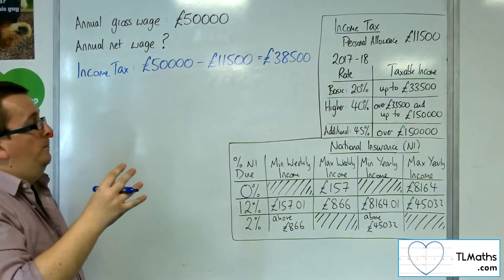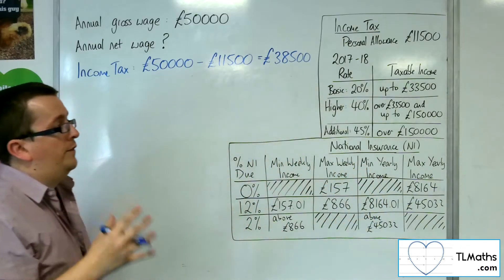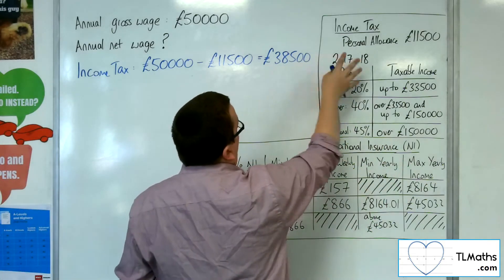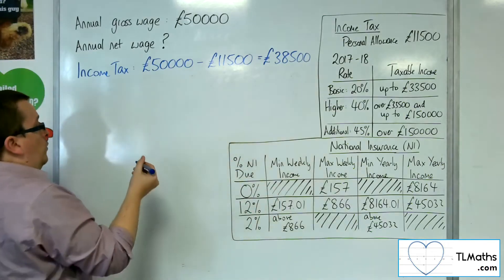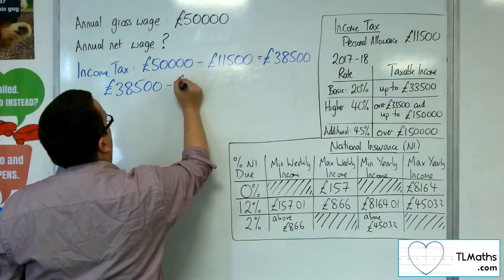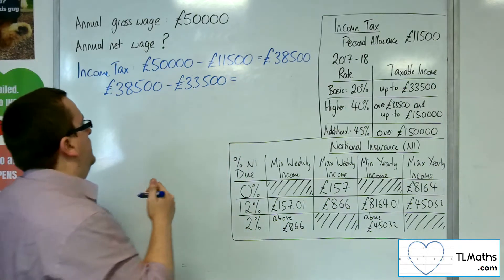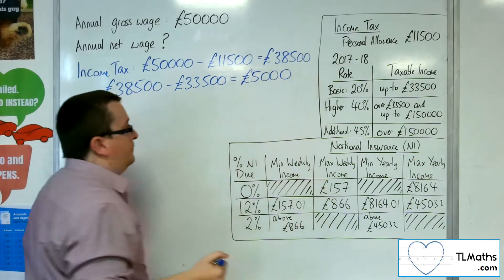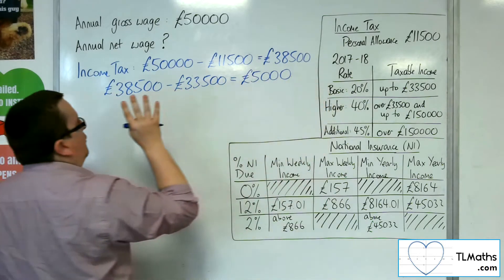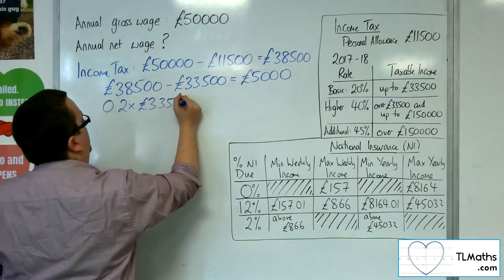So now the taxable income — the 20% rate gets charged up to £33,500. You get taxed 20% on the first £33,500 over the personal allowance. We're going to need to subtract the £33,500 from the £38,500, which gives us £5,000. So 20% applies to the first £33,500.